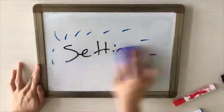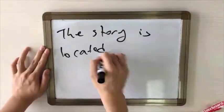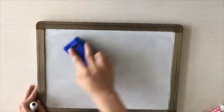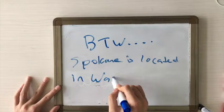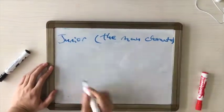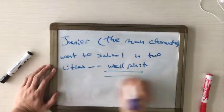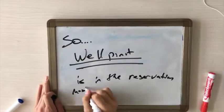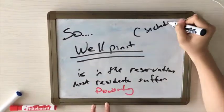So the setting of the story is mostly in the Spokane Indian Reservation, which is in the state of Washington. The two cities that Junior goes to for school is Wilpin, which is in the reservation where most of the residents suffer poverty, like starvation and whatnot.